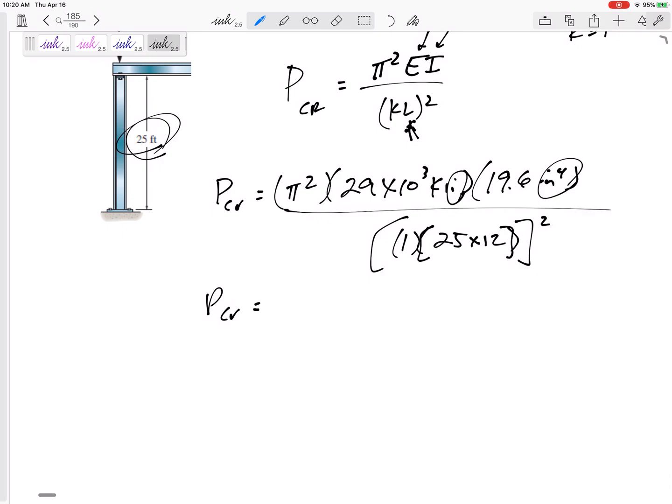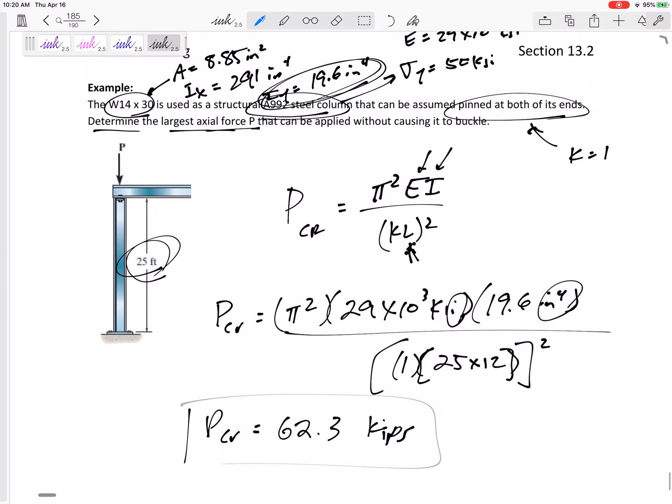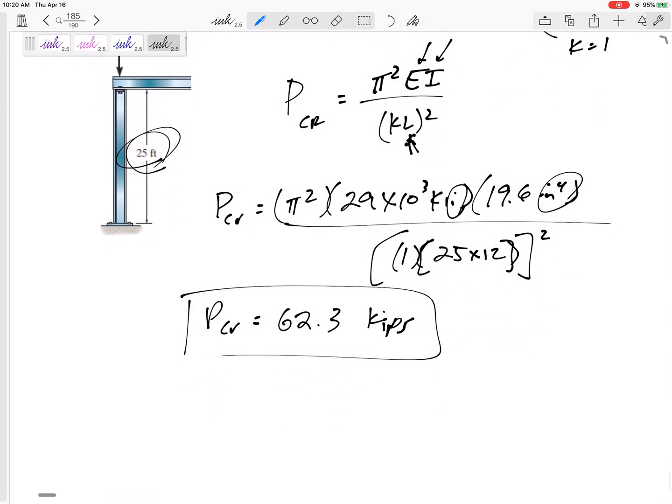The P, the critical force, 62.3 kips. 62.3 kips. That is the largest force before it will buckle. So, you can apply 50, 51, 52, 60, 61, but right around 62.3, it is going to buckle.